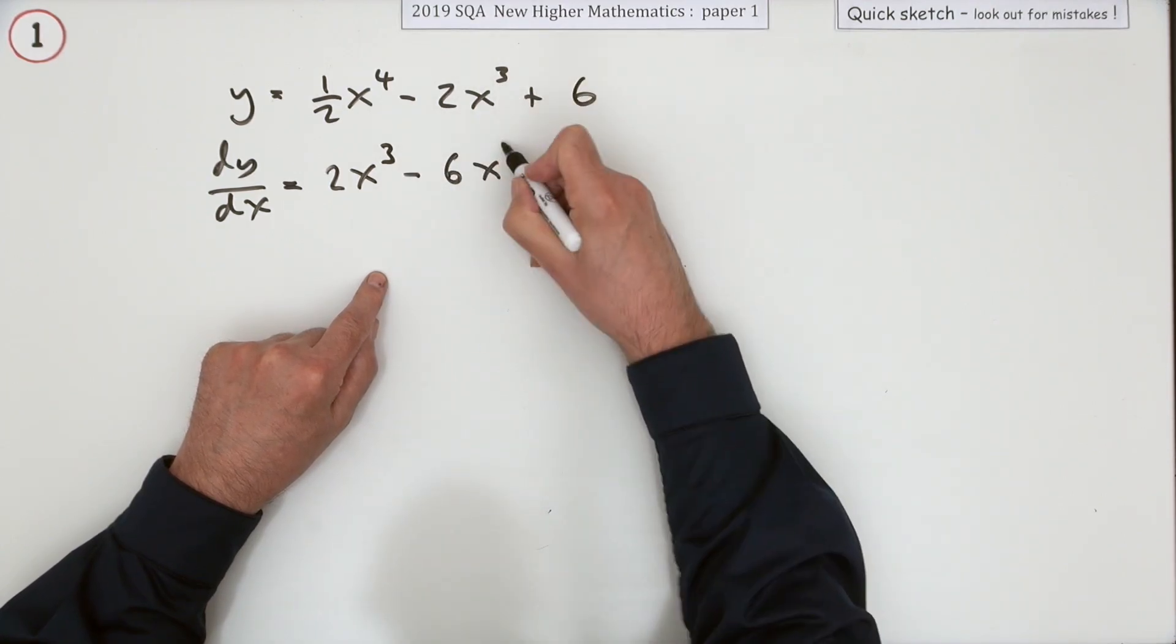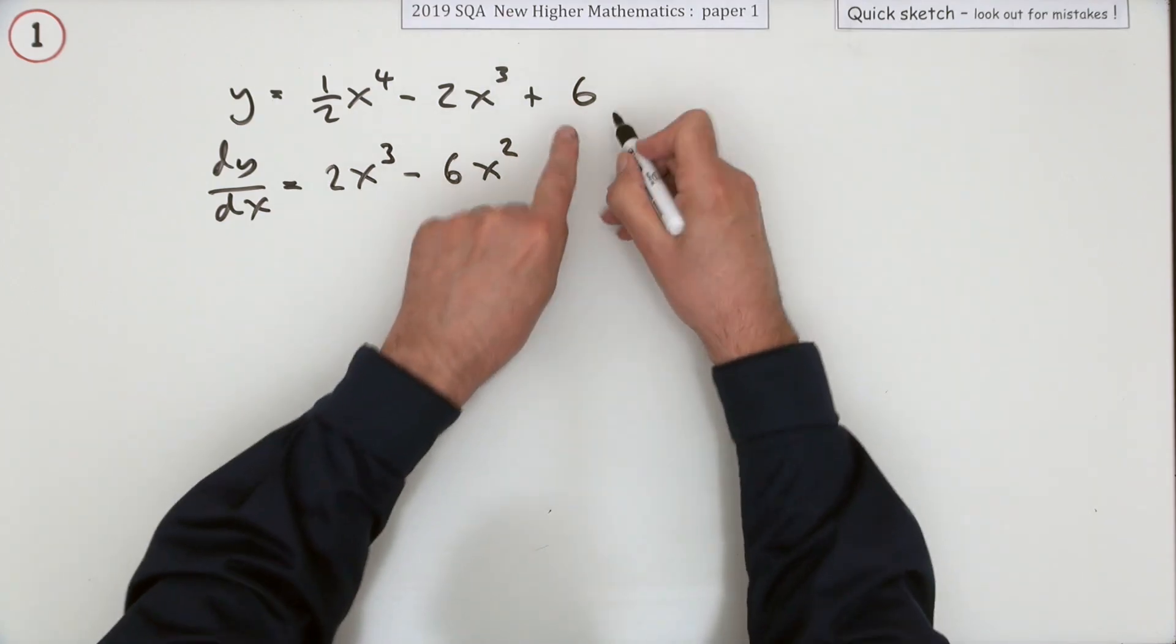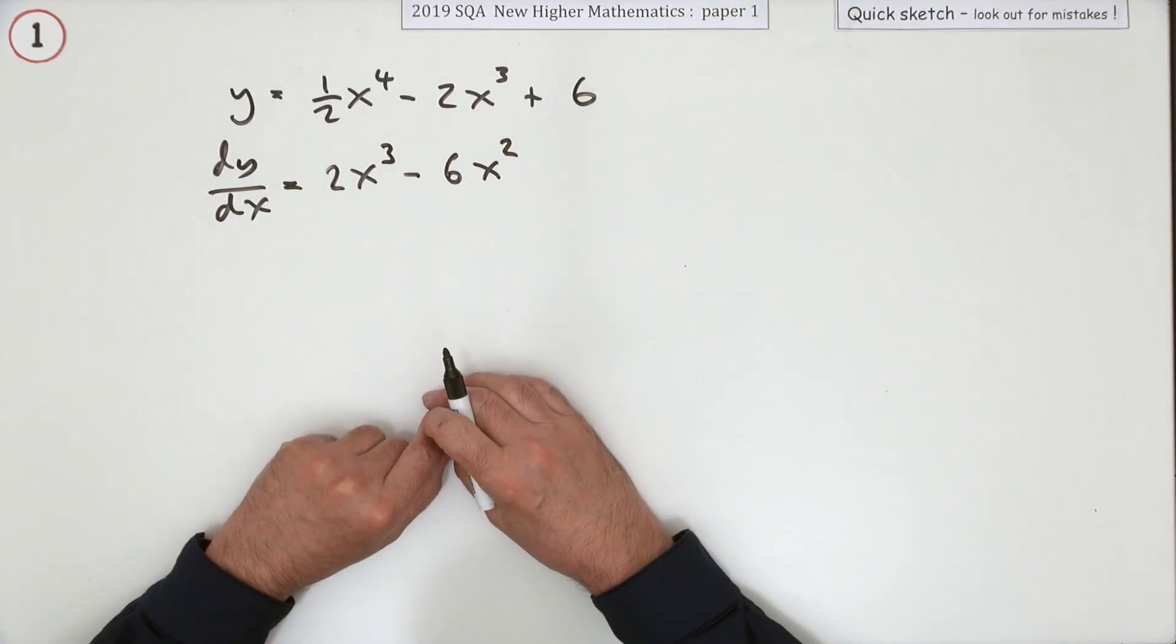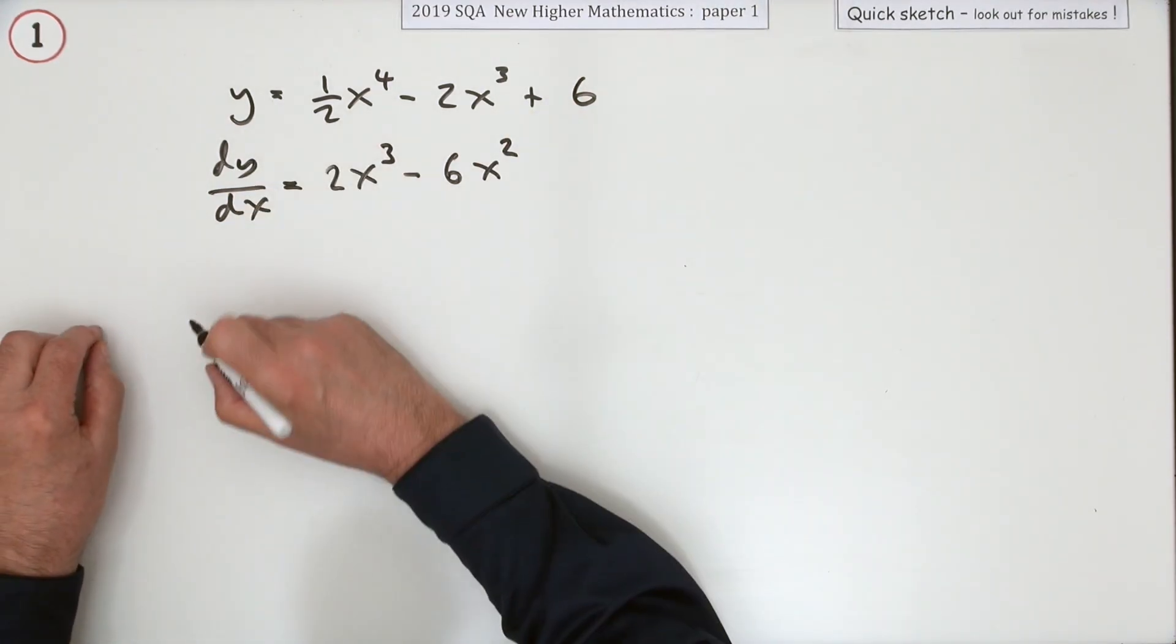A constant doesn't change, so that term disappears. Then you're looking for stationary points.